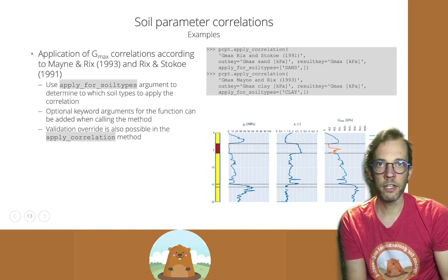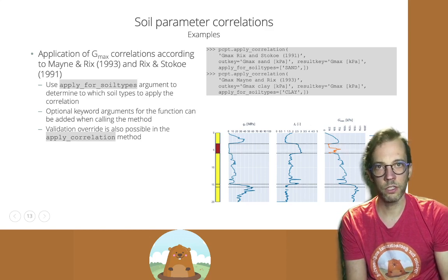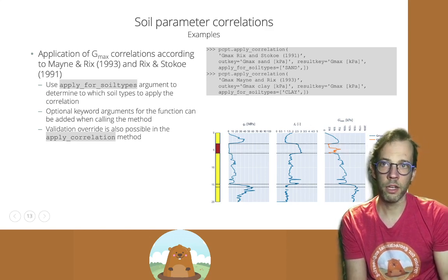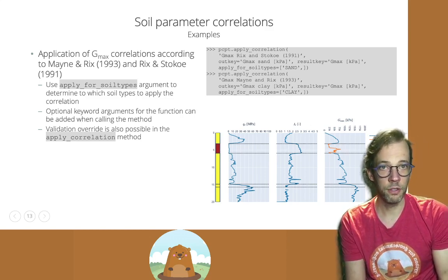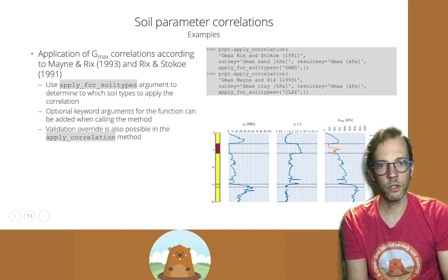So here in this case, the correlation for GMax according to Riggs and Stoku is only defined in sand. The correlation according to Main and Riggs is only applied in clay. And in the plot, you can clearly see the two results, the one shown in blue and the other shown in orange.